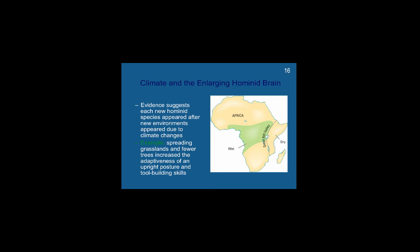There is a very distinct relationship between climate and enlarging the hominid brain. Evidence suggests that each new hominid species appeared after new environmental changes — so after climate changes. For example, the spreading of grasslands and fewer trees increased the adaptiveness of an upright posture and tool-building skills. If you're foraging in the grass, you need to be able to see over the grass and also climb and access trees. So changes in climate are actually linked with increases in cerebrum size for primates that eventually led to very early hominids.